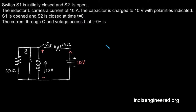Hi friends, this question is asked in the electrical gate exam. We have a switch S1 and another switch S2. Initially, switch S1 is closed and S2 is open. The inductor carries a current of 10 amperes and the capacitor is charged to a potential of 10 volts. At t equal to 0, switch S1 is opened and S2 is closed. We are asked to find the voltage across the inductor and the current through the capacitor.